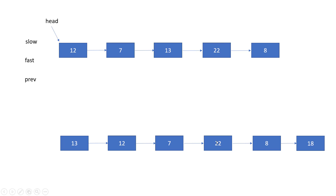So the linking becomes 12 → 7 → 22. Now we have the slow node, which is the middle node. We simply point slow.next to the head node. By this way, the middle node 13 will point to the original head, and all other linkings are correct.